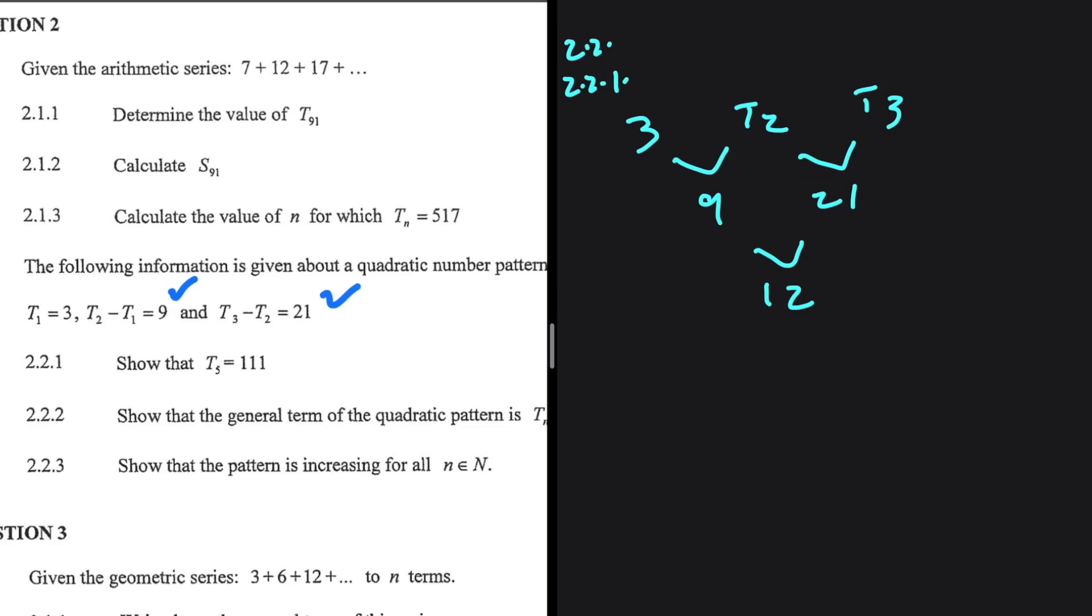2.2.1 tells you that T5 equals 111. 12 is our second common difference, right? So we also have 12 right here. 9 plus 12 gave us 21. What is 21 plus 12? 21 plus 12 is 33. So 33 plus T3. 33 plus T3 should give us T4. But we don't know T2 and T3. Let's find out what is the value of T2 first.